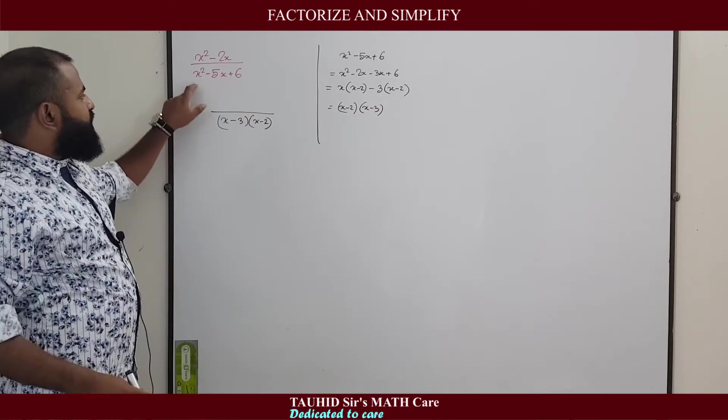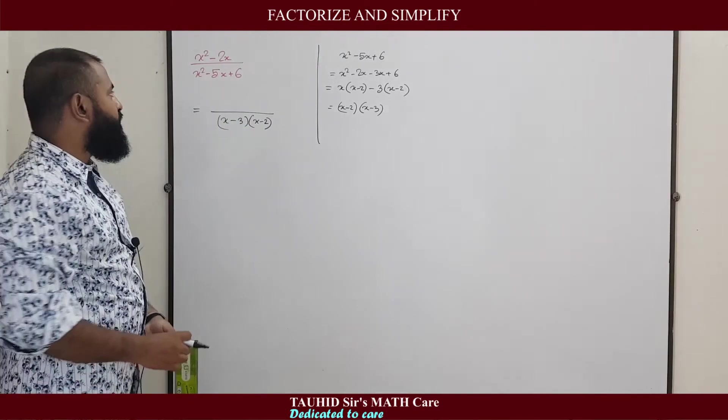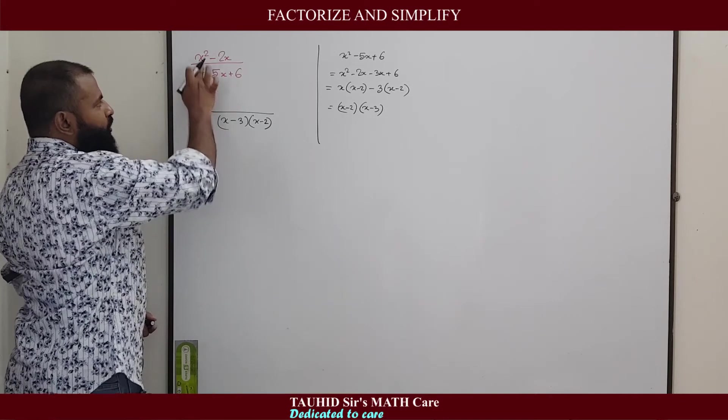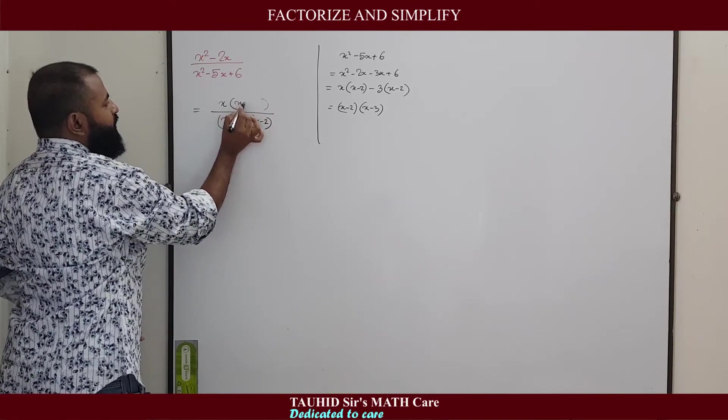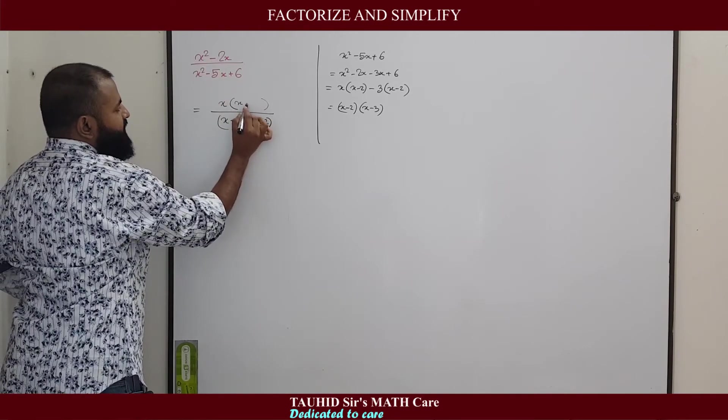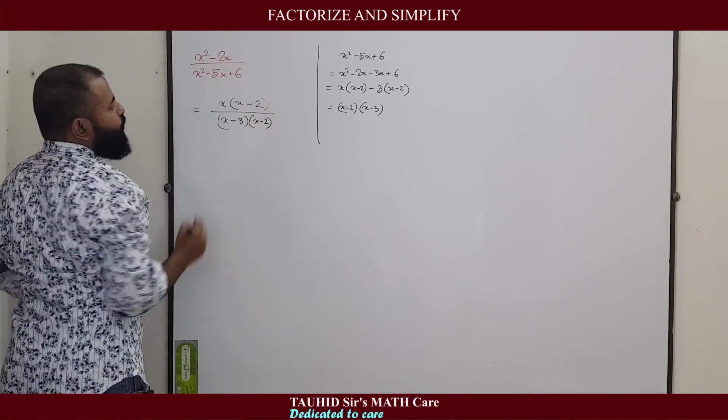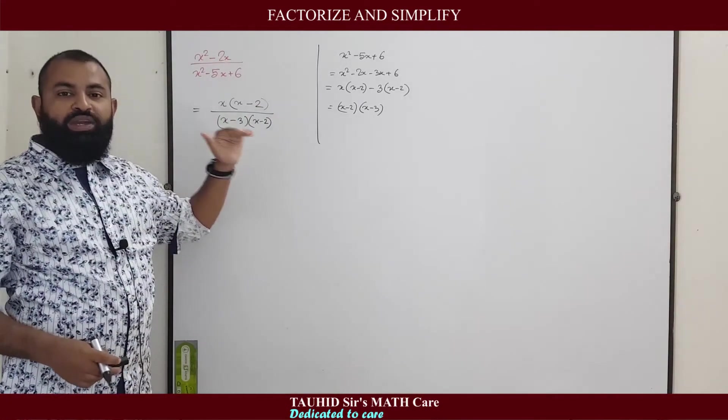So instead of x² - 5x + 6, we are putting here (x - 3)(x - 2). And in the numerator we can take x as common. So if we take x common from here, it becomes x and it becomes 2. So instead of x² - 2x, we can write x(x - 2).